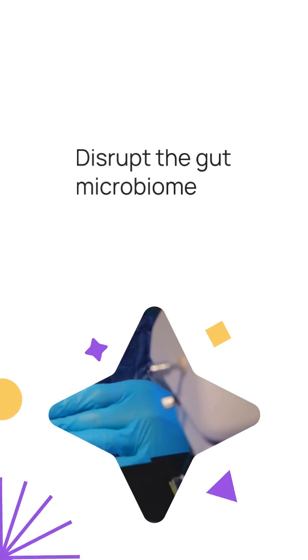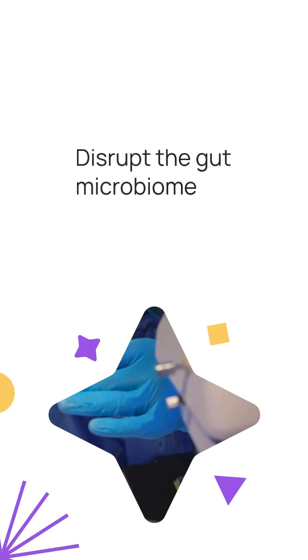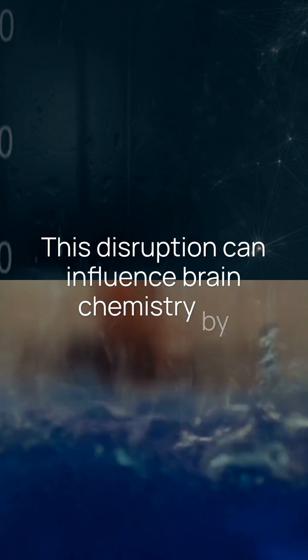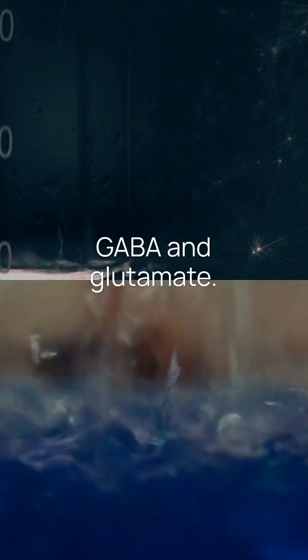The research goes deeper, examining how diets high in saturated fats might disrupt the gut microbiome. This disruption can influence brain chemistry by altering the production and transmission of GABA and glutamate.